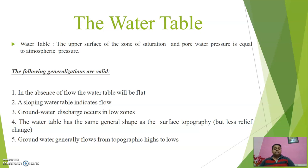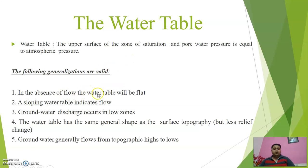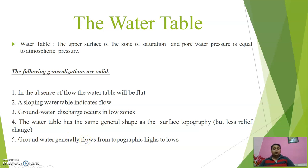Water table: the freely available water surface below the ground surface is known as the water table. A water table is the free water surface in an unconfined aquifer. In the absence of flow, the water table will be flat. These terms are needed for understanding groundwater movement and analysis, since groundwater accounts for 30% of freshwater and is equally important as surface water. A sloping water table indicates flow; groundwater discharges occur in lower zones, and groundwater generally flows from topographic highs to lows.